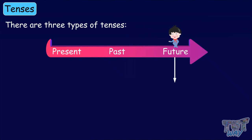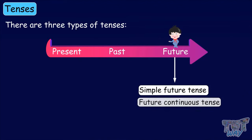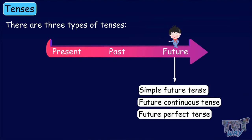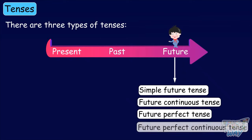Future tense is further divided into four types: simple future tense, future continuous tense, future perfect tense, and future perfect continuous tense.